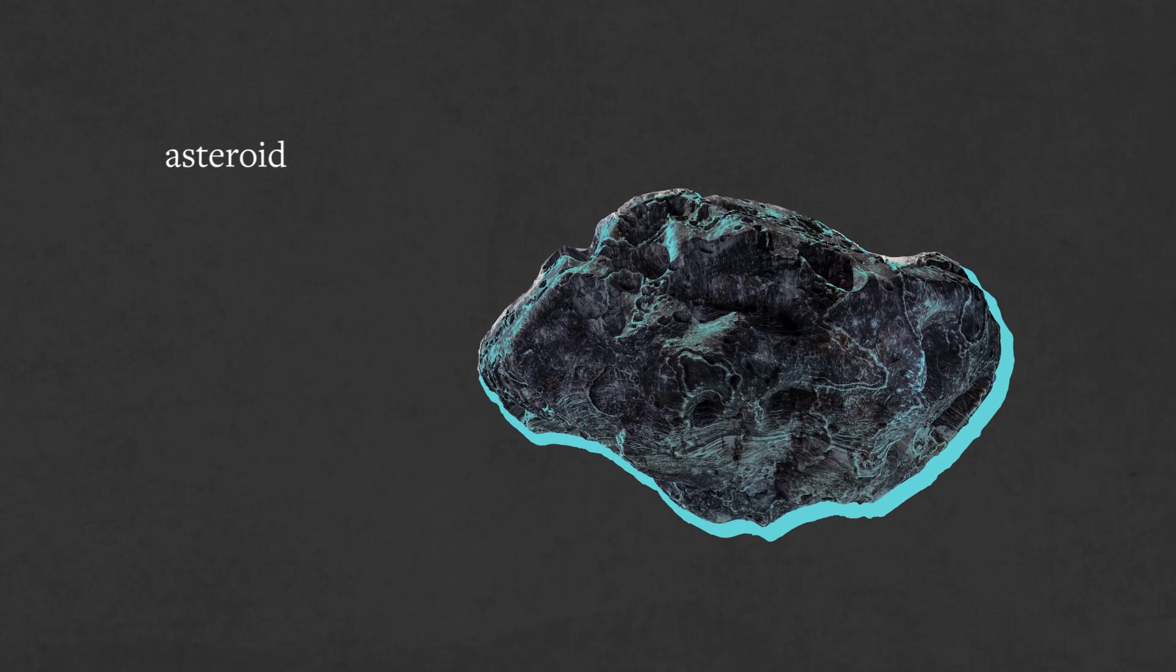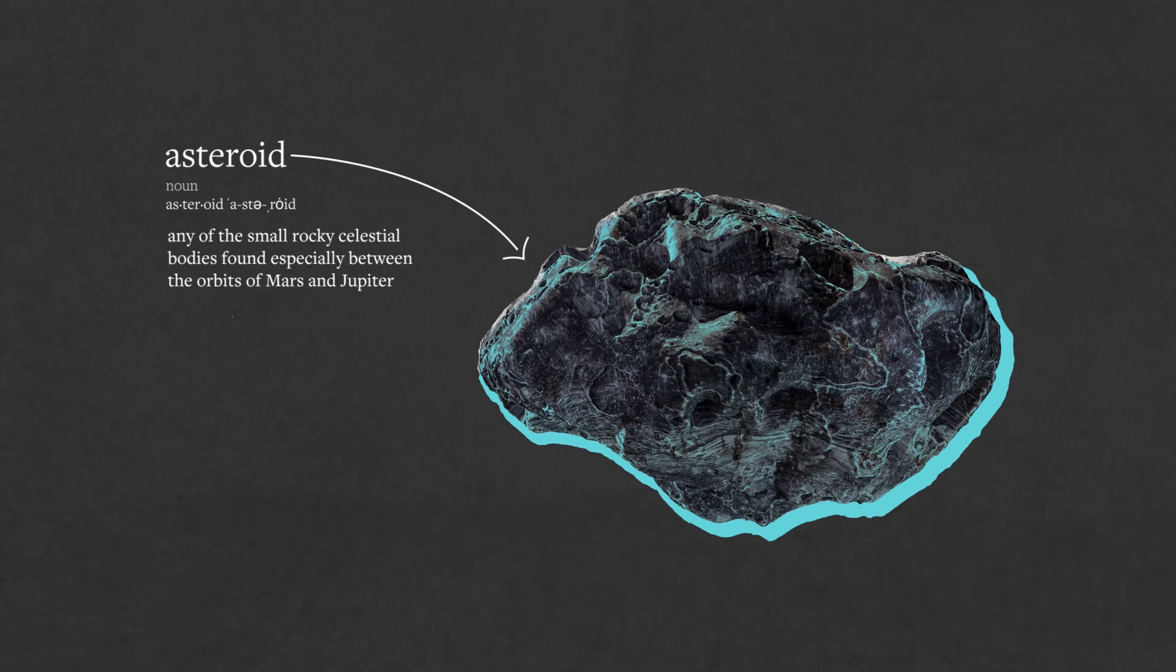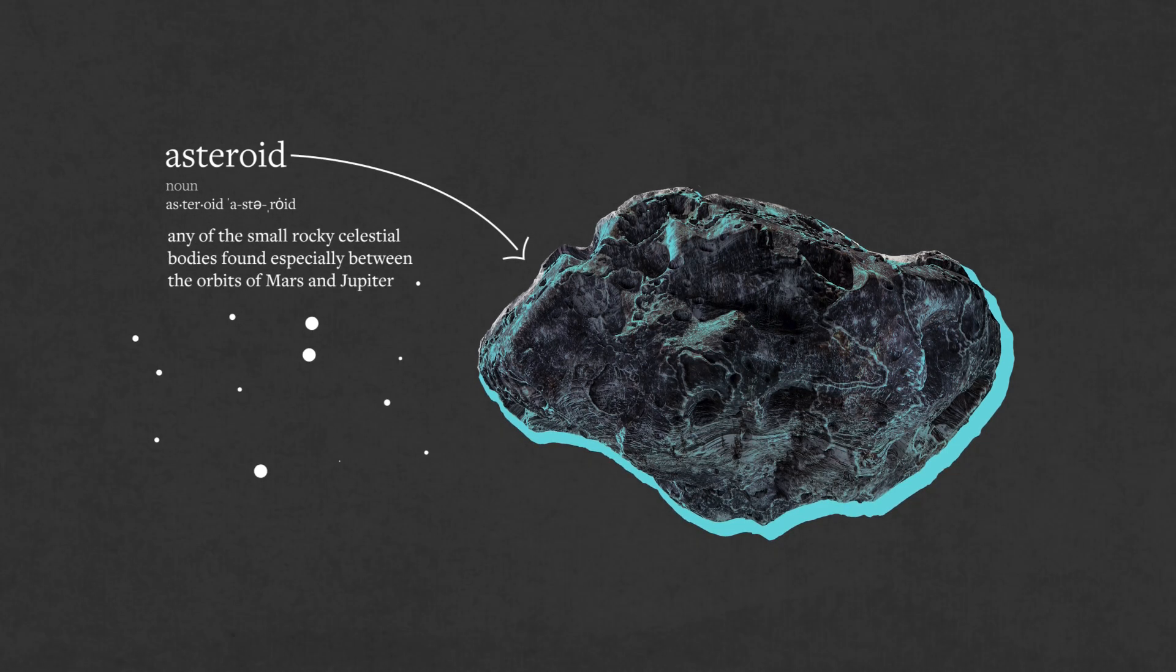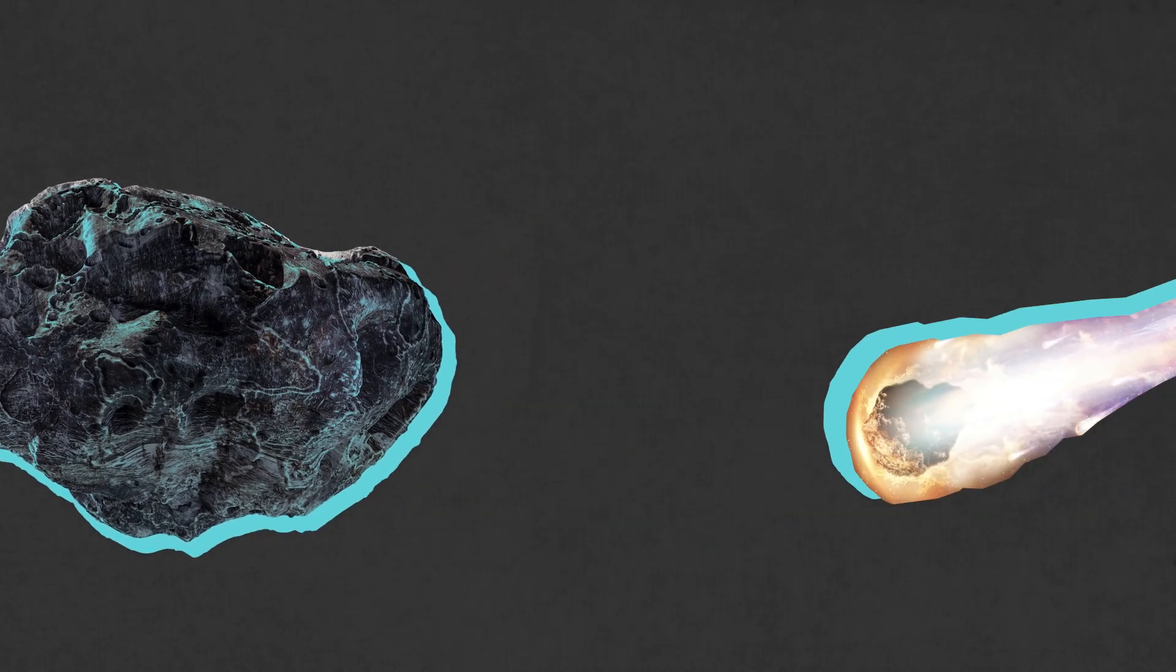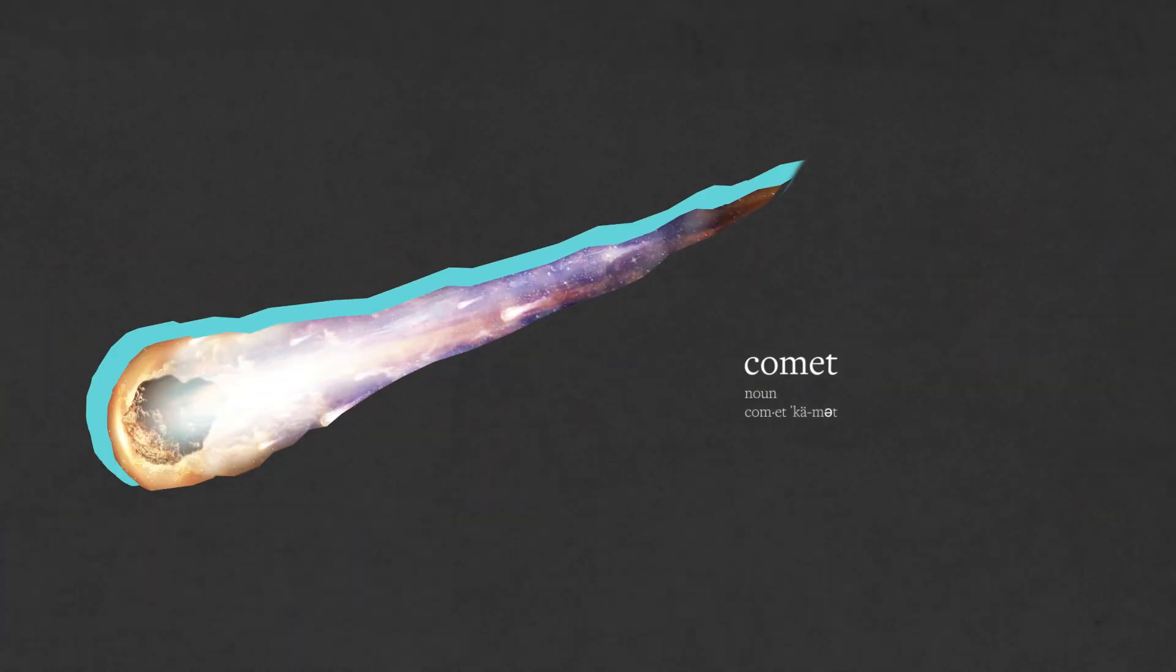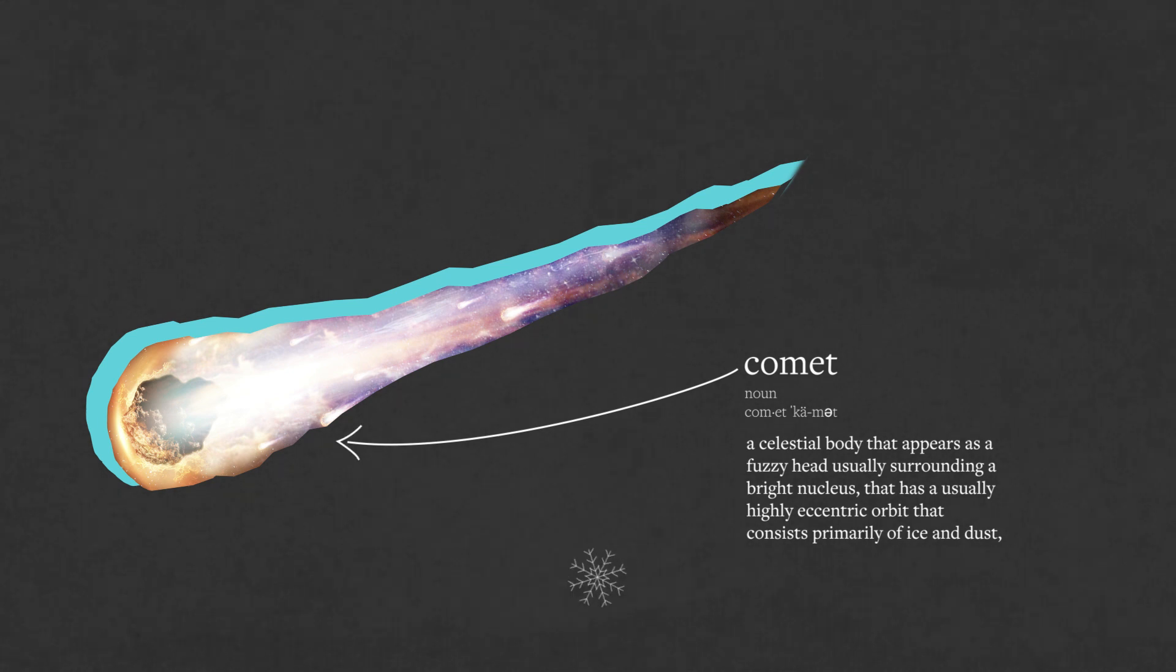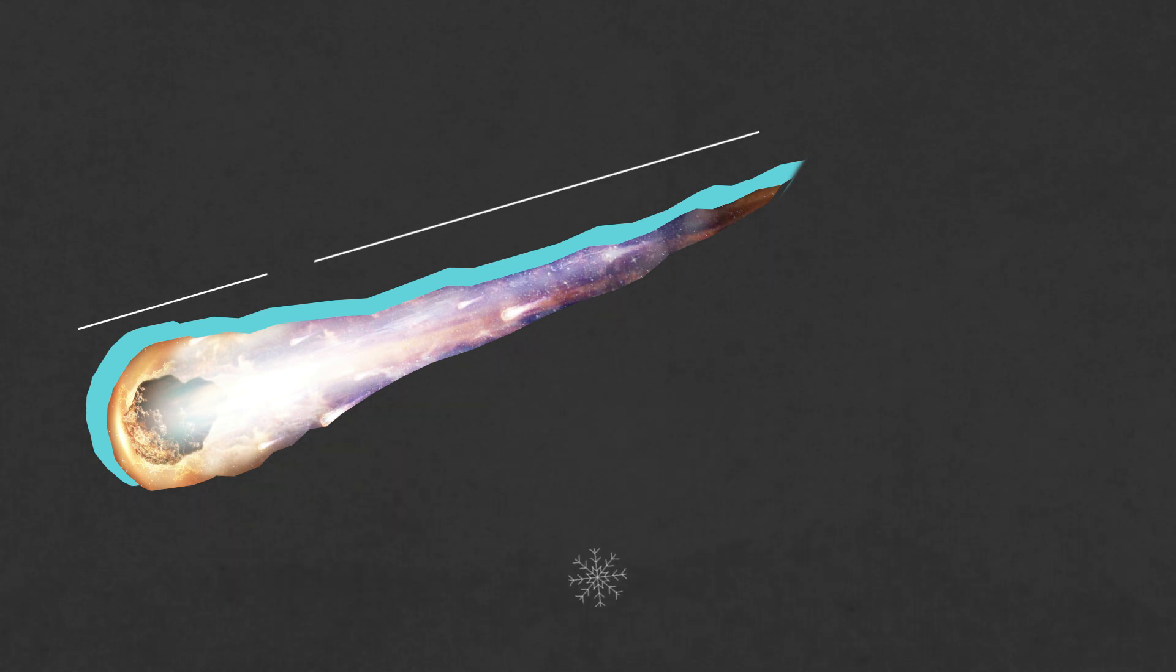Asteroids are solid, rocky objects that appear as small pins of light when seen through telescopes and revolve around the sun in elliptical orbits. Comets are composed of ice and dust particles which burn up as they pass near stars in a process known as outgassing. This gives comets their signature tails and comas and also gives them a boost of acceleration as they speed through the solar system.